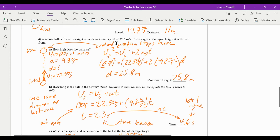We're looking for D. So we don't have time. So we can use the equation VF² = VI² + 2AD, and we get 25.8 meters.